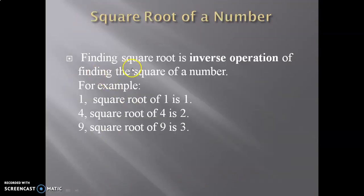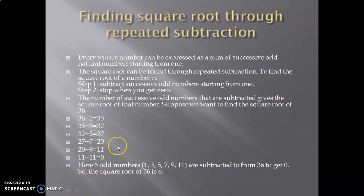Finding square root is the inverse operation of finding the square of a number. For example, square root of 1 is 1, square root of 4 is 2, square root of 9 is 3.